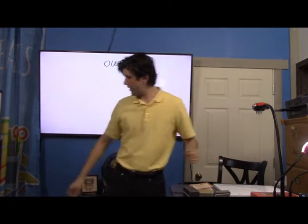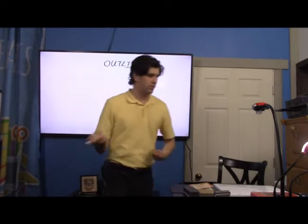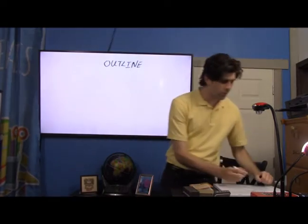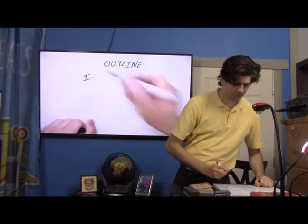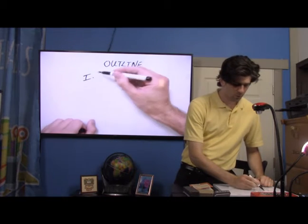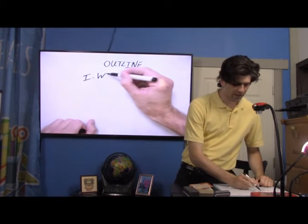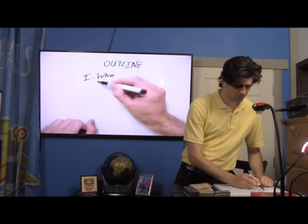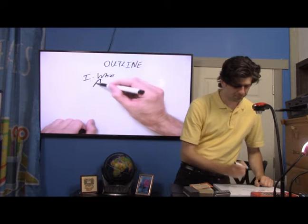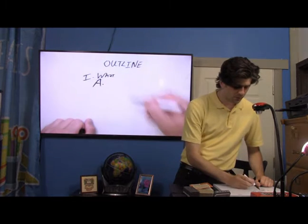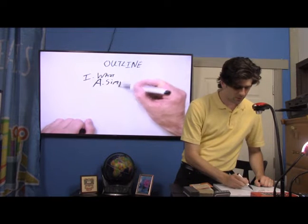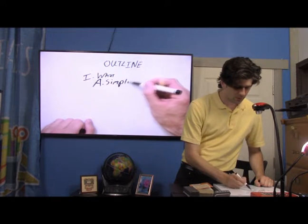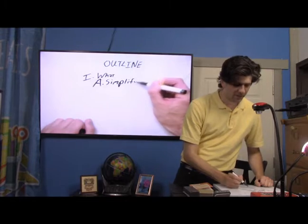Here's how it works. You start with the Roman numeral I — this is the first thing. For example: 'What is an outline?' It's a way of simplifying information.